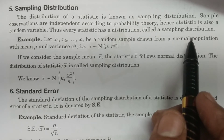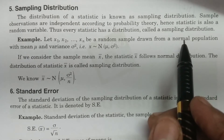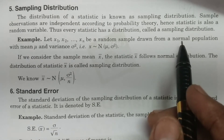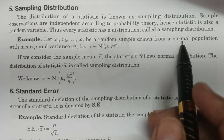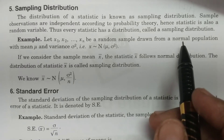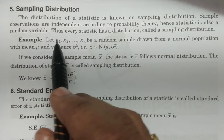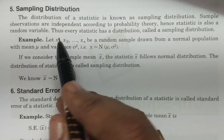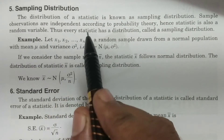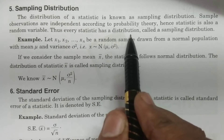Every distribution has a certain probability law. Every distribution must consist of a particular probability law. Therefore, every statistic has a distribution.